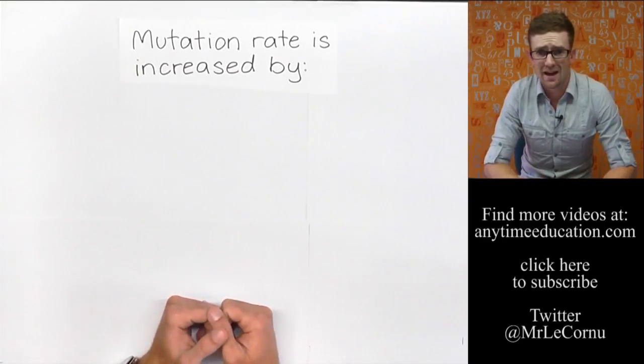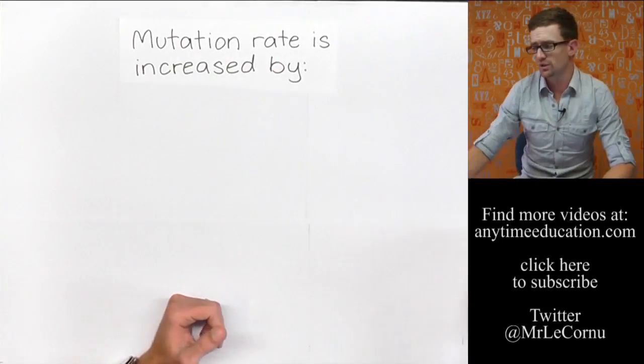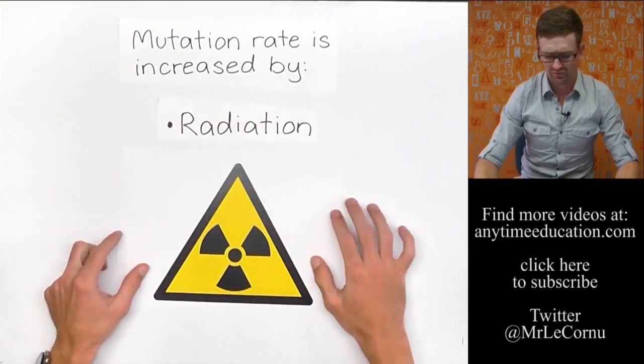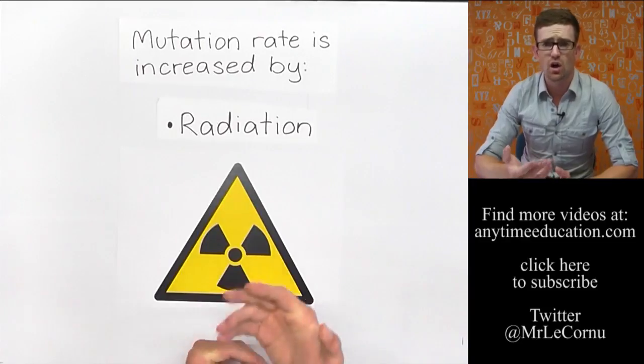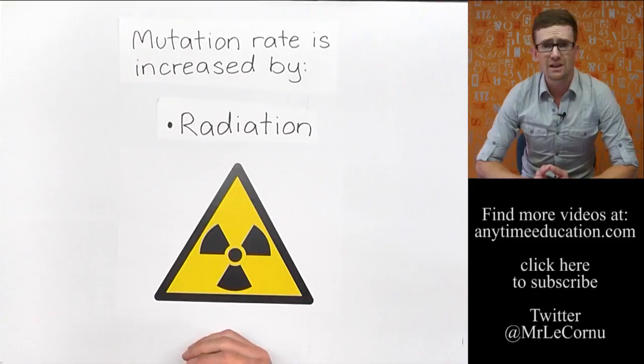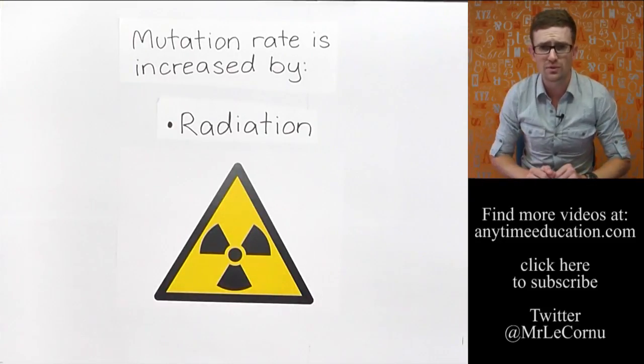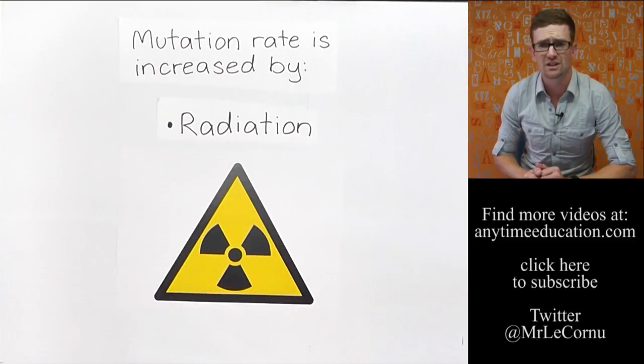The first example of a factor that can cause mutation, or increase the rate of mutation, is high-energy radiation. Examples of high-energy radiation are things like ultraviolet radiation from the sun, or X-ray radiation. They're two examples of types of radiation that can increase the rate of mutations in DNA.